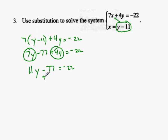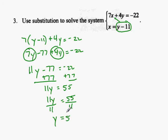And now we're going to solve for y. So I'm going to add 77 to both sides of the equation. So I get 11y equals 55, and then I divide both sides by 11. And I get y equals 5.